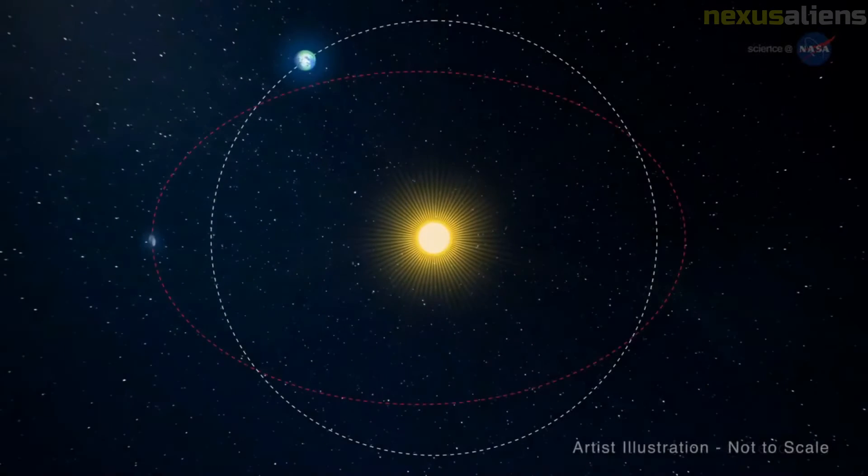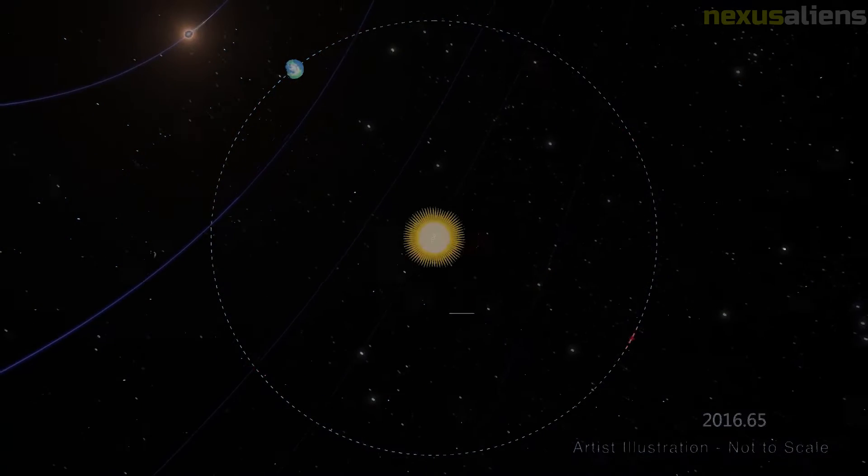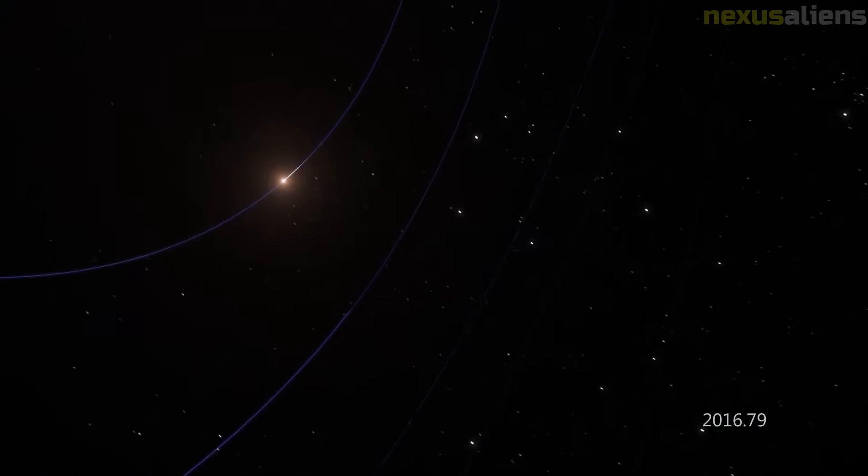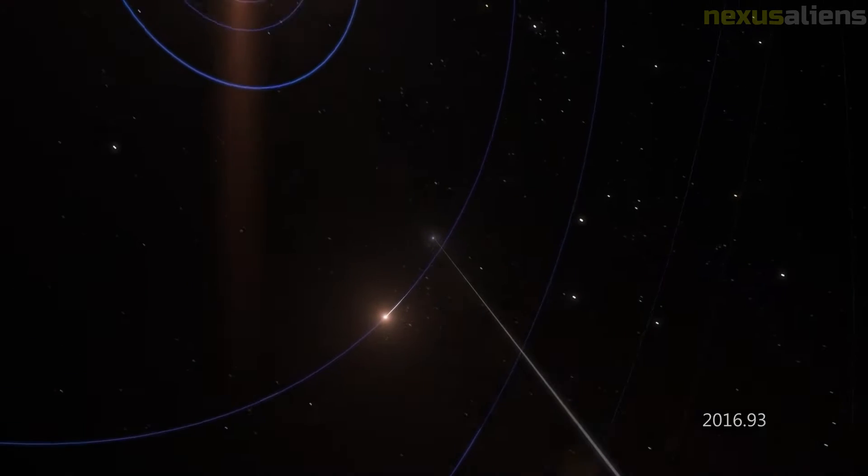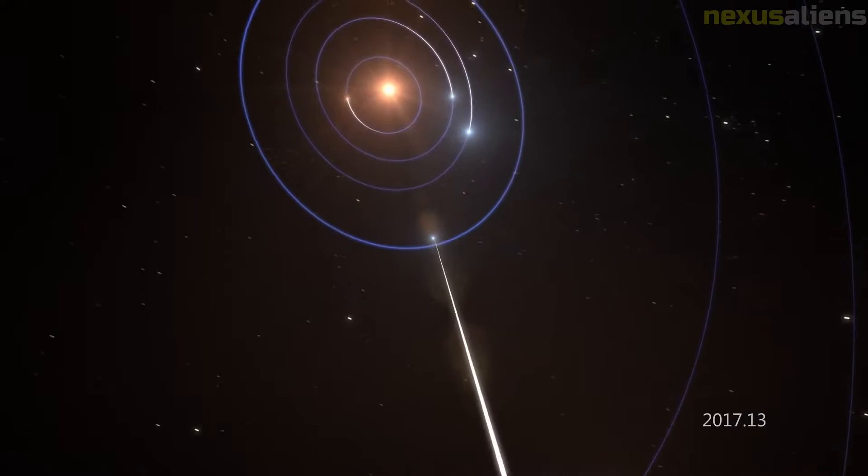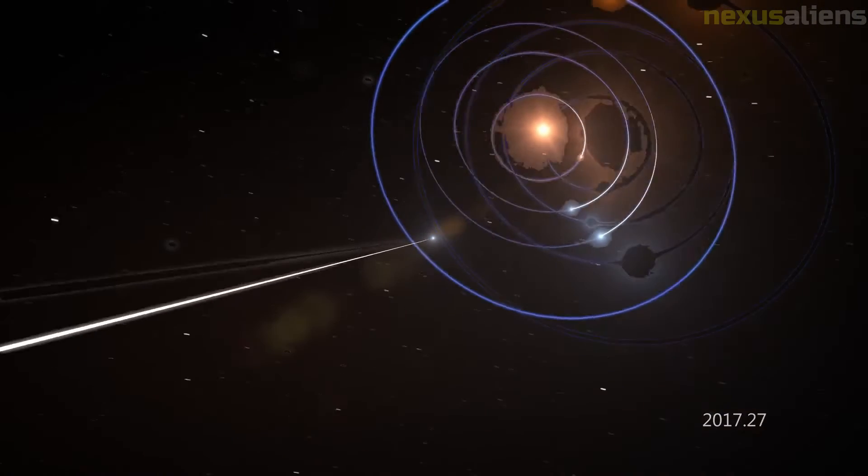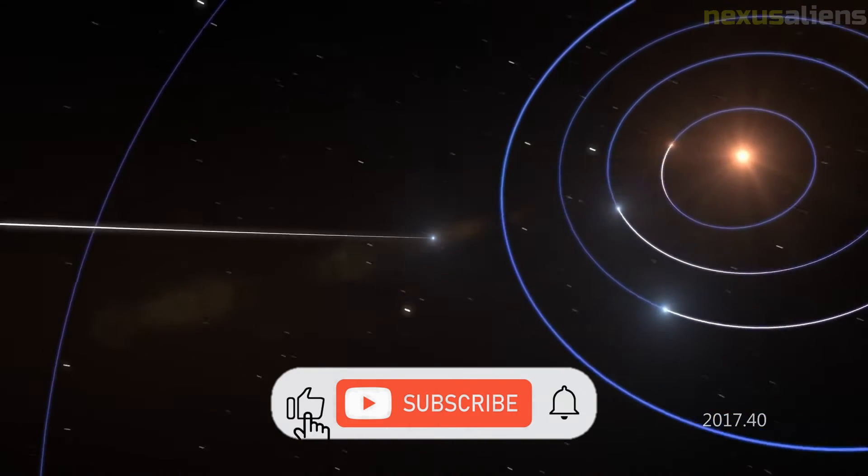Astronomers calculate that 100 years ago the object was 83.90 billion kilometers, 52.10 billion miles from the sun and traveling at 26.33 kilometers per second with respect to the sun.